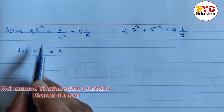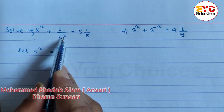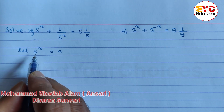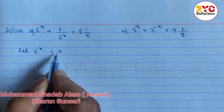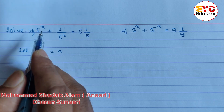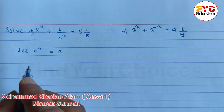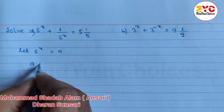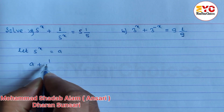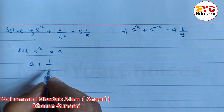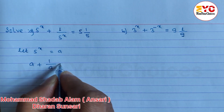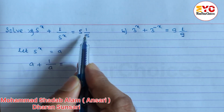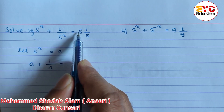So x is already set. Let 5 power x equal to a. So a plus 1 divided by 5 power x is equal to a. The mixed fraction is equal to a.